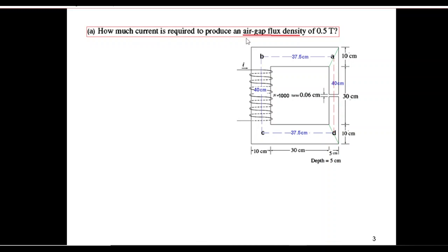Now the first part, part (a): how much current is required to produce an air gap flux density of 0.5 tesla? So the flux density in the air gap is given as 0.5 tesla, or weber per meter squared, and we have to find the current required to produce this flux density. The formula is that the MMF, magnetic motive force, equals number of turns times current. So from here, current will be F_total divided by N. All we need to do is find the total magnetic motive force in this circuit.